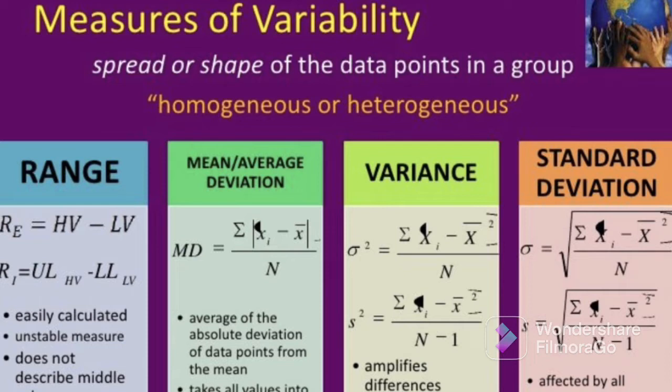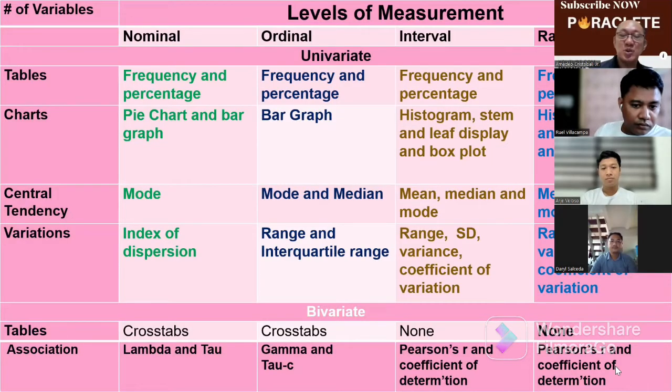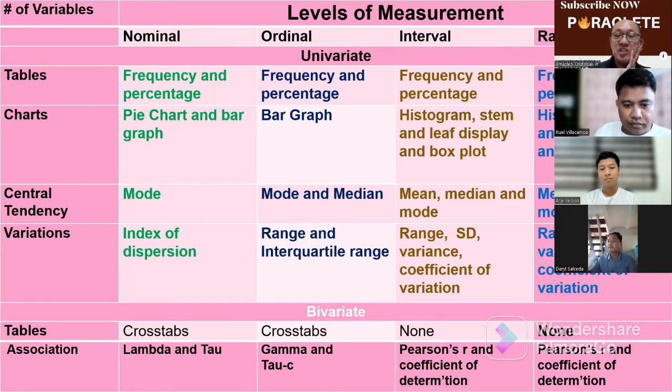But if you are having two, you can use cross tabulation. Then when you do the associations or the relationships or the differences, these are the suggested tools to use. You have the lambda and tau formula, the gamma and tau for the bivariate ordinal data. And then for the interval data, these are commonly used for quantitative research because you usually use the weighted mean. You have the Pearson r, coefficient of correlation, the coefficient of determination, and so on and so forth.